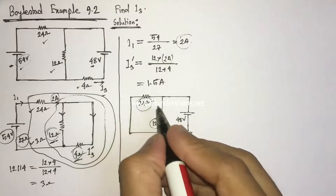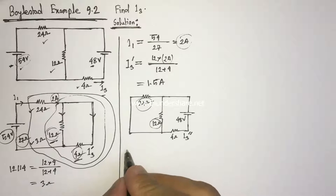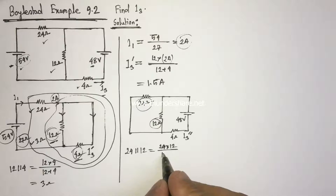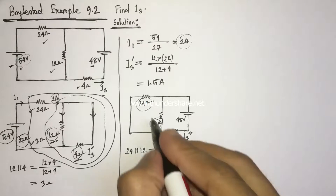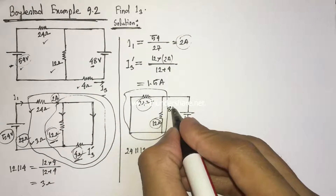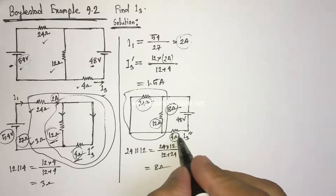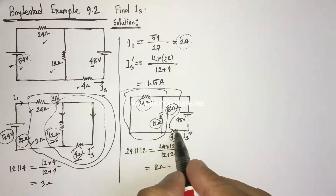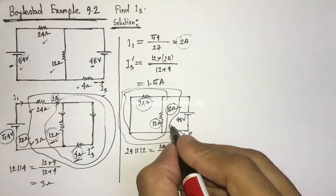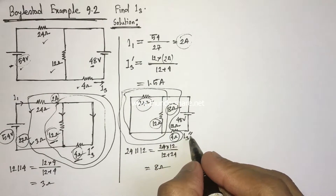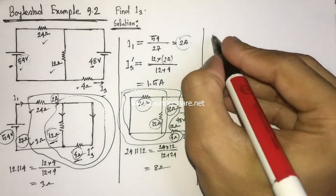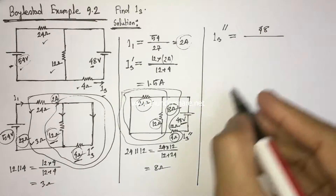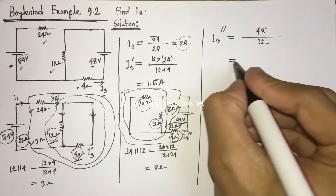We see that the 12-ohm resistance and 24-ohm resistance are in parallel. The equivalent of these two resistances is 24 multiplied by 12 divided by 12 plus 24, which equals 8 ohms. We see that the 8-ohm resistance and 4-ohm resistance are in series, so they are added directly: 8 plus 4 equals 12 ohms. I3 double prime equals 48 volts divided by 12 ohms, which equals 4 amperes.